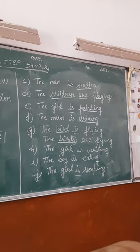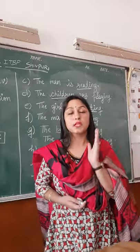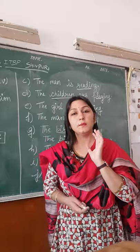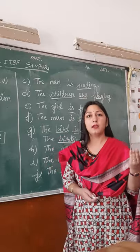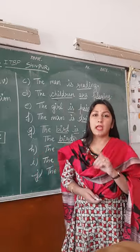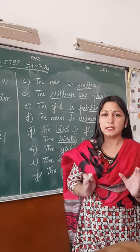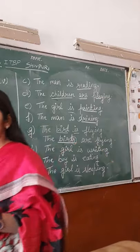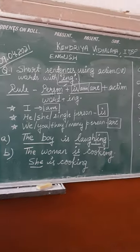I hope you have understood, children. Where do you use 'is' or 'am'? For a single thing or single person, you will use 'is' — the boy, the girl, the woman. For many people, you use 'are.' And for 'I,' you use 'am' — I am eating, I am playing, I am dancing. So we have learned short sentences using an action word with '-ing.' Thank you so much, children. You can see the sentences here, and here we have learned the rule.